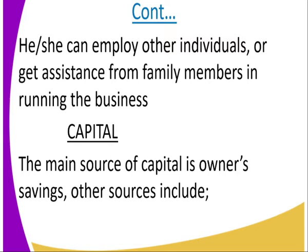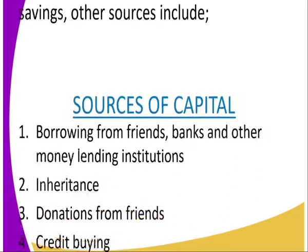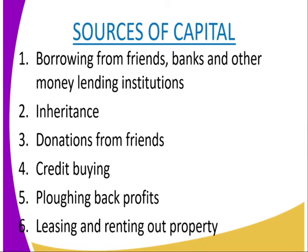Where does this person get the capital? The main source of capital is the owner's savings — the sole proprietor's savings. Apart from that, you can get contributions from family members. You can also borrow from friends or from the bank, and from other lending institutions. There is also inheritance — you can inherit a business and become the sole proprietor.